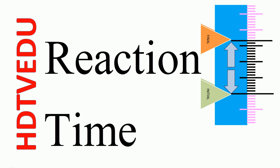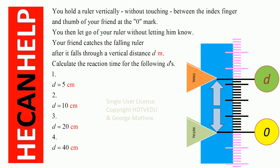Reaction time. Welcome. You hold a ruler vertically without touching between the index finger and the thumb of your friend at the zero mark. You then let go of your ruler without letting him know. Your friend catches the falling ruler after it falls through a vertical distance d. Calculate the reaction time for the following d's.